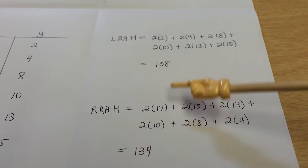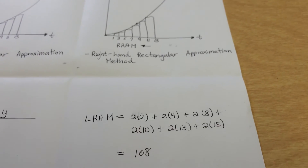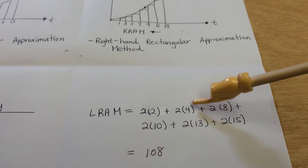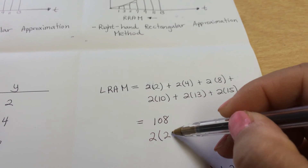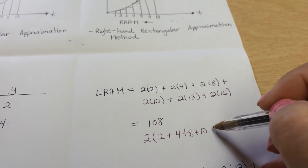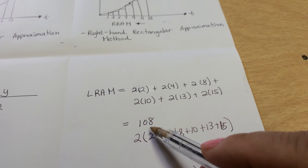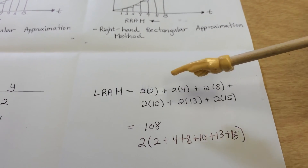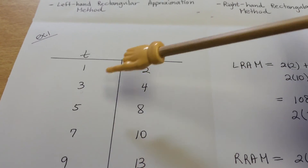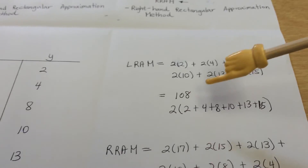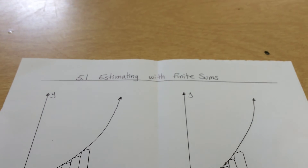Also algebraically, if the base is consistently two throughout, you can factor out that two and then just sum all the heights: two plus four plus eight plus ten plus thirteen plus fifteen, which still gives us 108. This is another efficient method when bases are consistent. If the base is not consistent, then you have to calculate each one individually. But in this case the base is consistently two, so you factor it out, sum the heights, and put it in the calculator. That's the method we'll use for section 5.1.